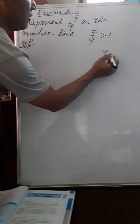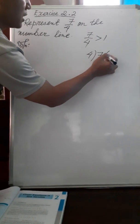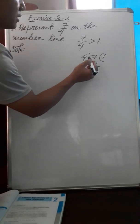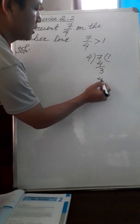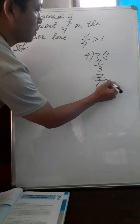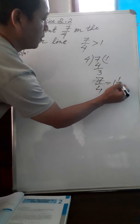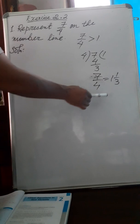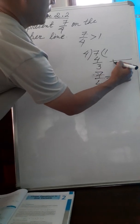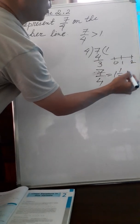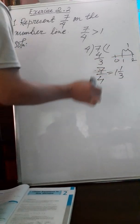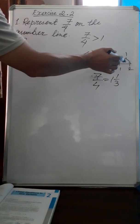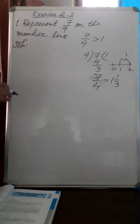Let's look at 7 by 4. 7 divided by 4 gives 1 remainder 3, so 7 by 4 can be written as 1 and 3 by 4. So 7 by 4, or 1 and 3 by 4, will be between 1 and 2 on the number line.